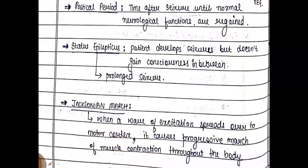Now what do you understand by the post-ictal period? What is status epilepticus? And what is Jacksonian march? The post-ictal period is the time after a seizure until normal neurological functions are regained. What is status epilepticus? The patient develops seizures but does not regain consciousness in the meantime. This condition is called status epilepticus, or you can also say it is a prolonged seizure.